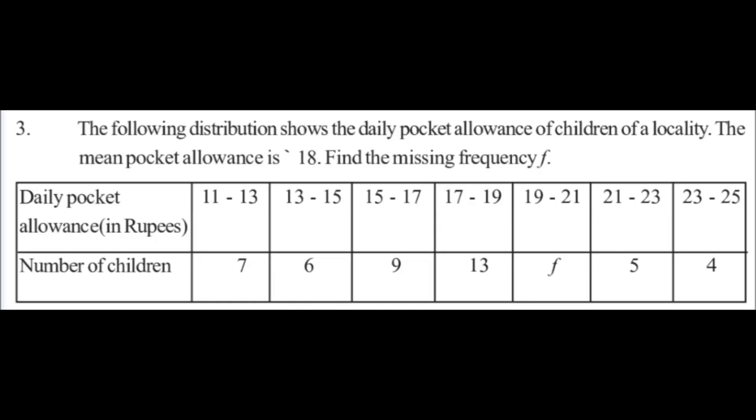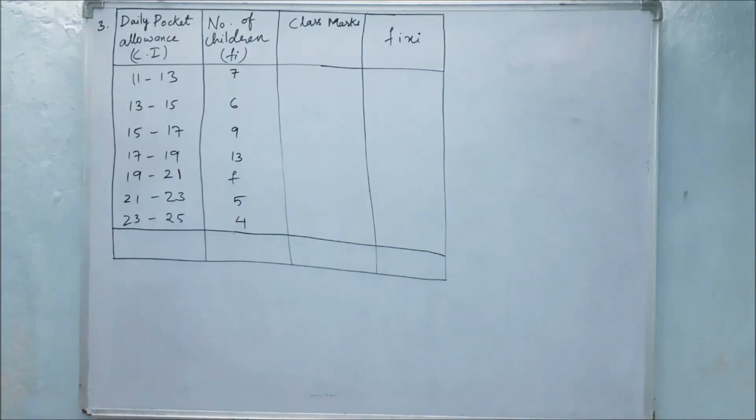Third problem. The following distribution shows the daily pocket allowance of children of a locality. The mean pocket allowance is 18 rupees. Find the missing frequency f. So they have given the daily pocket allowance and the mean pocket allowance. We have to find the missing frequency, so first of all we will write this.